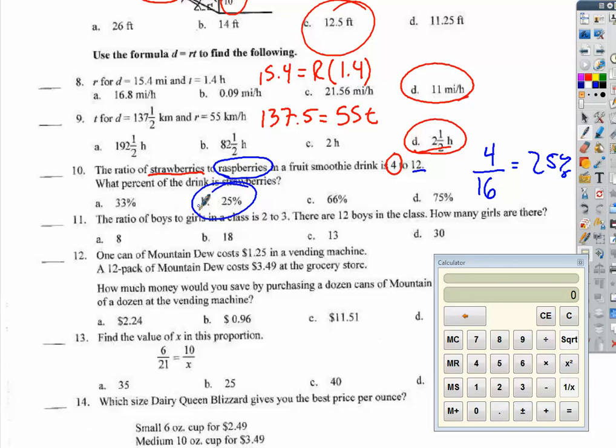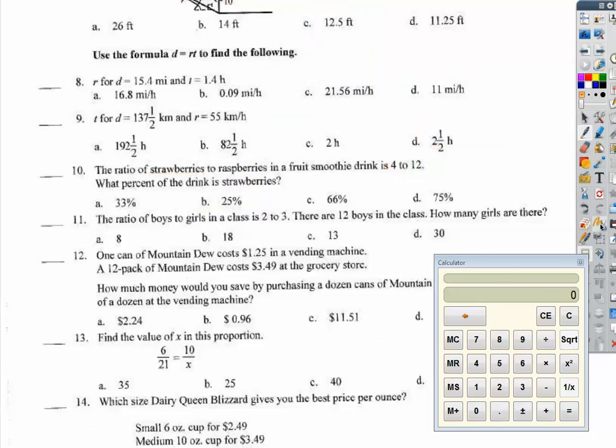The ratio of boys to girls in a class is 2 to 3. There are 12 boys in the class. How many girls are there? We know that 2 to 3, and this is boys and this is girls, because it tells us in the ratio statement, is equal to 12 over x. What do I multiply 2 by to get 12? 6. So, I need to multiply that by 6 as well. Then I get 18. 18 girls.